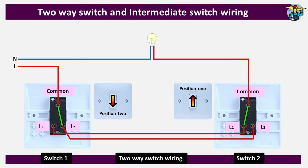If anyone at the upper floor needs light to go down the stairs, they change the present position of switch number two to position two, completing the circuit and lighting the bulb again.